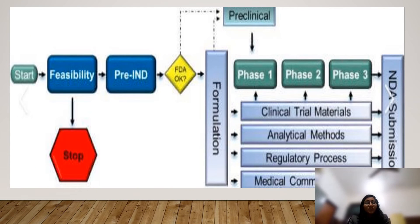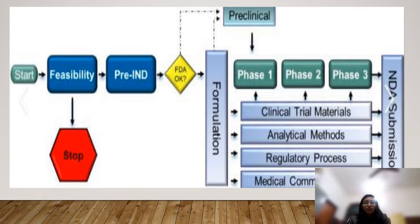This flowchart explains how the process of NDA submission is done. The process initiates with the pre-investigational new drug application form submission. If that application form is found acceptable and marked okay by the FDA, then the process of pre-clinical trial begins. That includes three phases: phase 1, phase 2, and phase 3. Further information regarding clinical trial materials, analytical methods, regulatory processes, and medical communication are required, after which the NDA submission is finalized.